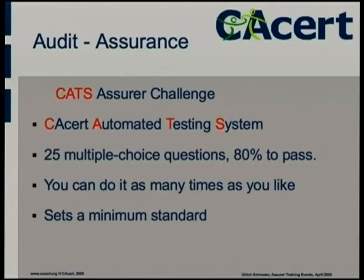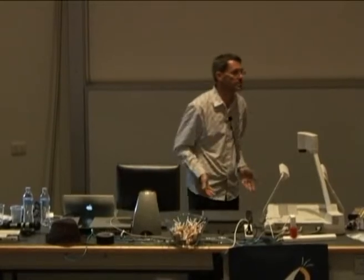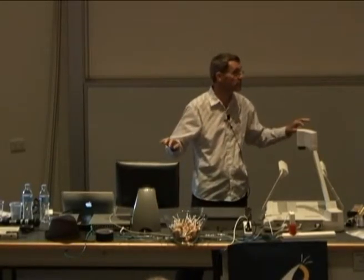Let's talk about the Cats Assure Challenge. Who here has done it? Four. So there's some work to be done there. It's pretty simple — 25 multiple choice questions, you just need 80%. You can do it as many times as you like; you can do it with books beside you. All it does is set a minimum standard. It means we can talk to the auditor and say, look, all of our assurers, when they issue their points, have passed the Cats Assure Challenge — they've reached a certain benchmark. He might then come back and say we need to raise it or lower it. But we can have that conversation. That's all it does — sets a standard.